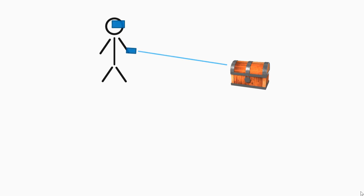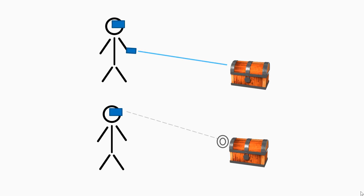Regardless of the system, they both share a lot of things in common. It all starts with an origin and a ray that finds an interactable object, and that object can have different behaviors.